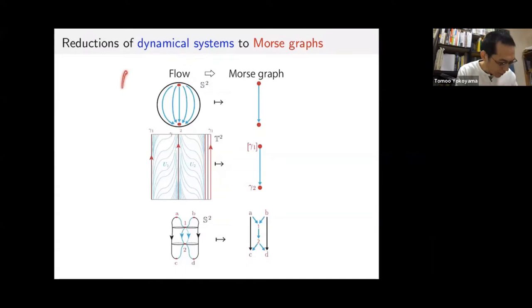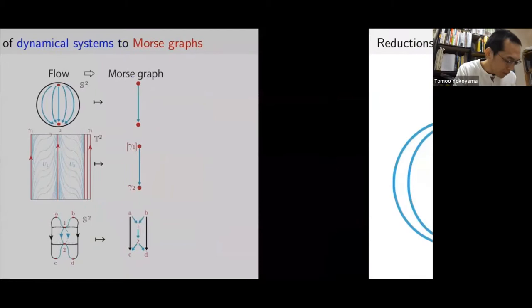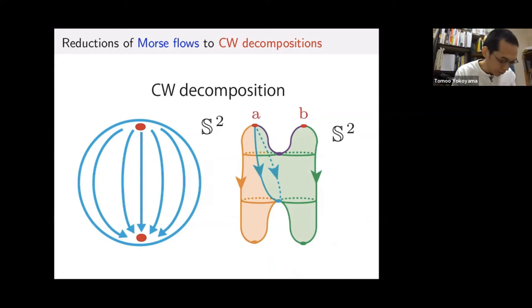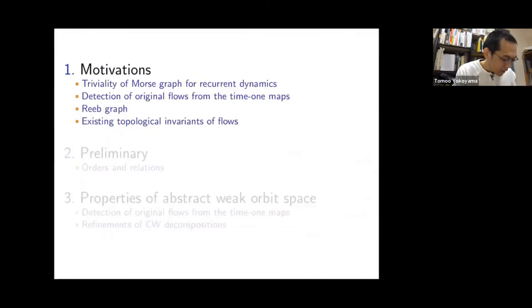These three dynamical systems can be converted into three graphs. Moreover, CW decomposition is a fundamental concept in topological space, and it's a very basic structure. Some kinds of flows have a CW complex structure. For instance, Morse flows have a CW structure. In this talk, we introduce a topological invariant that is a generalization of those three concepts.